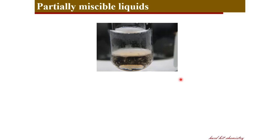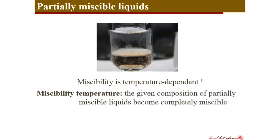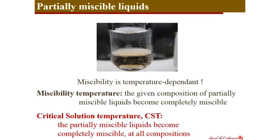This means miscibility is temperature dependent, and that temperature dependence is described through miscibility temperature — the temperature above which, at a given composition, the two liquids become miscible and the two phases become one. Critical solution temperature (CST) is that temperature above or below which, depending on the nature of the two liquids, the two liquids become homogeneously mixed into a single phase. That characteristic temperature which gives the miscibility of the two liquids at any composition is called the critical solution temperature.